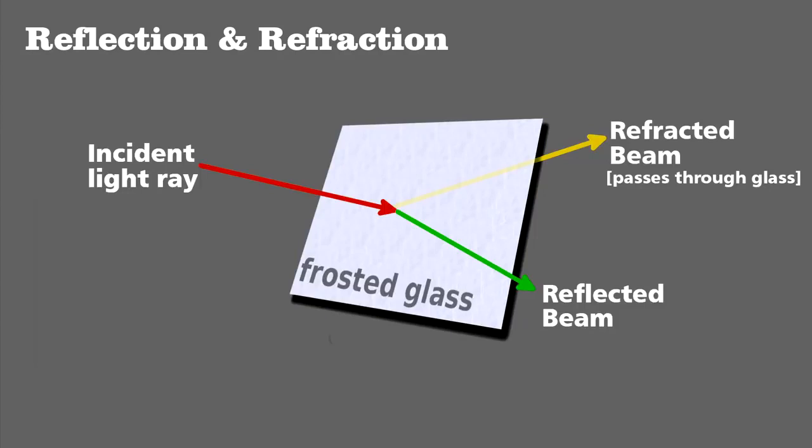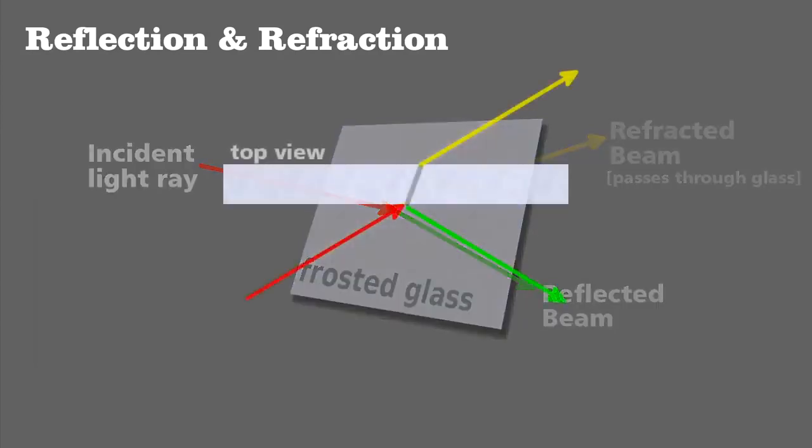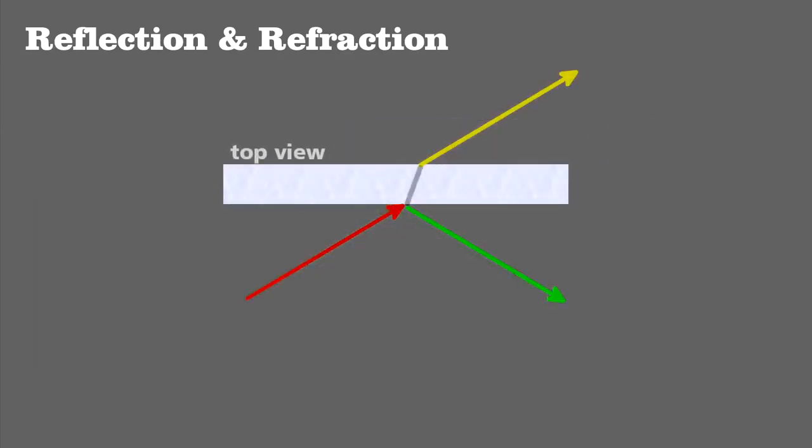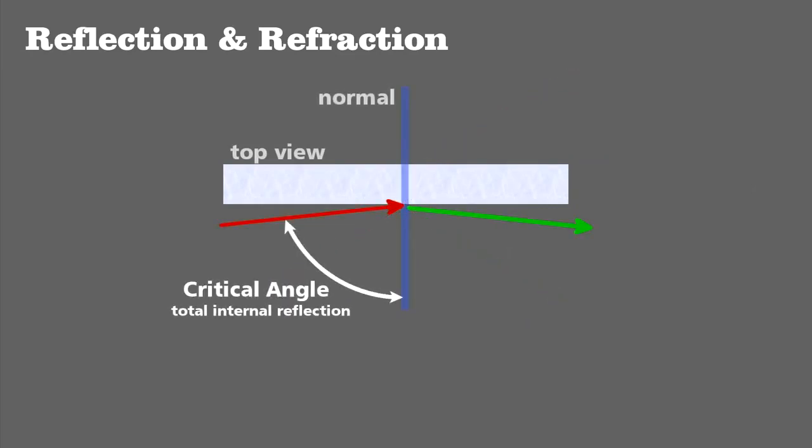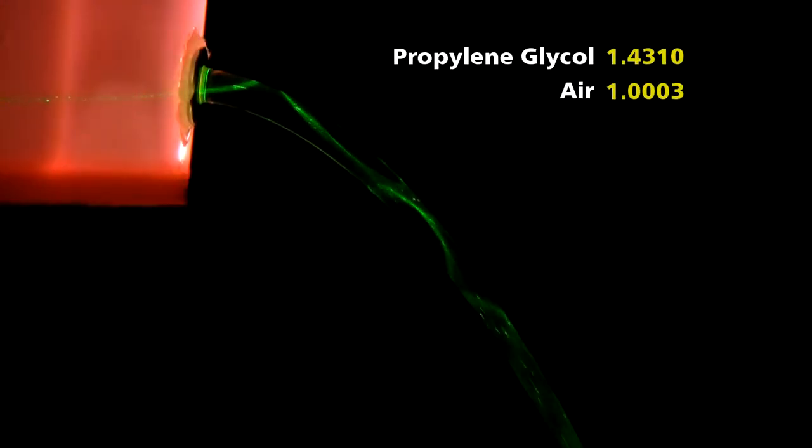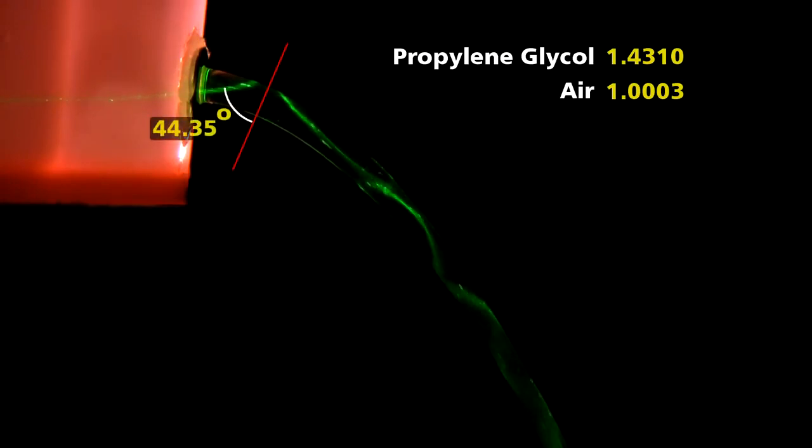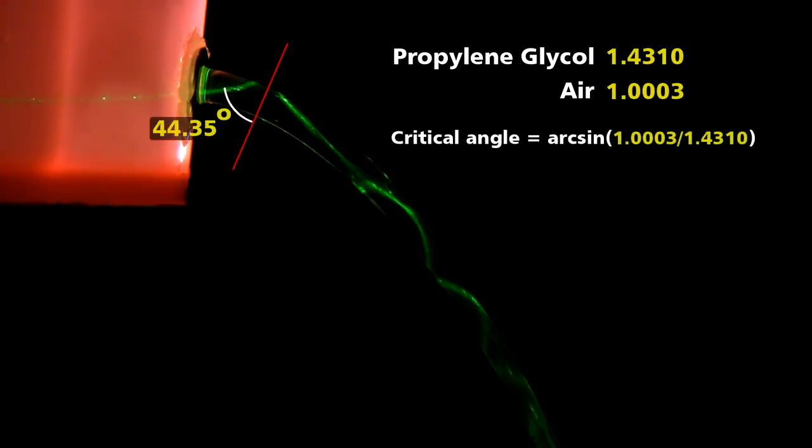The latter we call refraction. It's easier to see from a top view. Reflection and refraction can happen at the same time, but if a light ray hits the surface at an angle greater than the critical angle, it will be completely reflected and not refracted. For this propylene glycol and air system, as long as a beam hits the surface at an angle greater than 44.35 degrees measured from the normal,